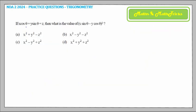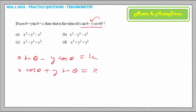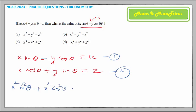The last question: given x cos θ + y sin θ = z, find the value of (x sin θ - y cos θ)². Let us call this unknown term k. We have two equations — equation 1 is x cos θ + y sin θ = z, and equation 2 is x sin θ - y cos θ = k. The technique is to square both equations and add them together.